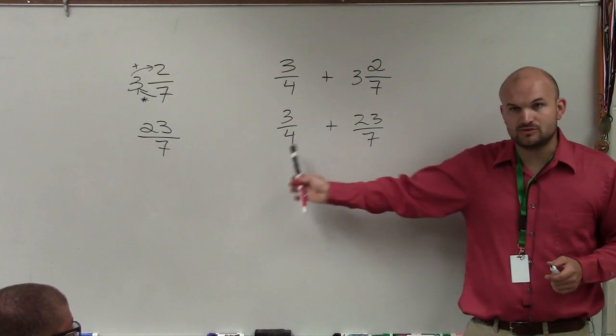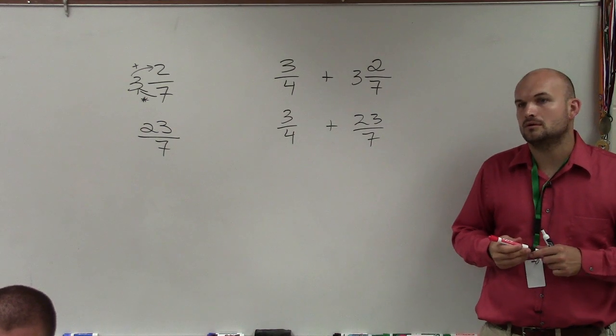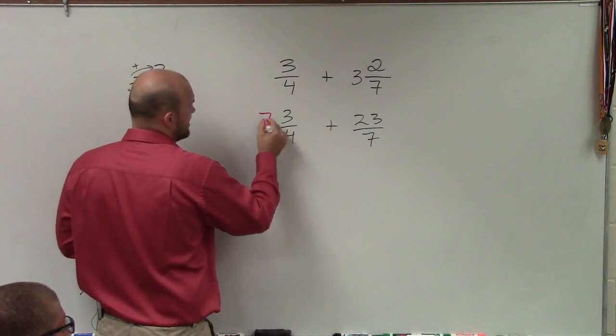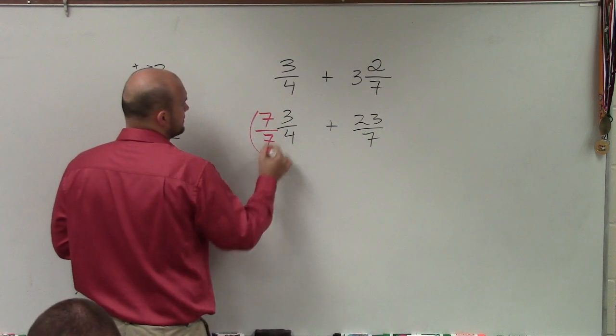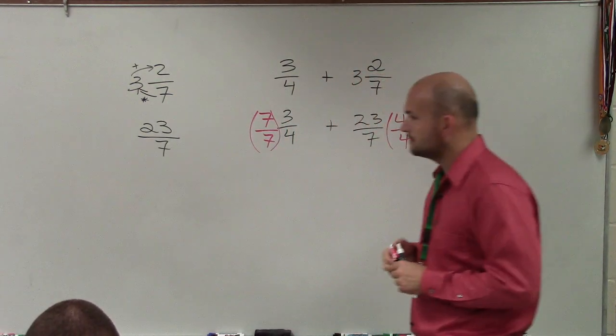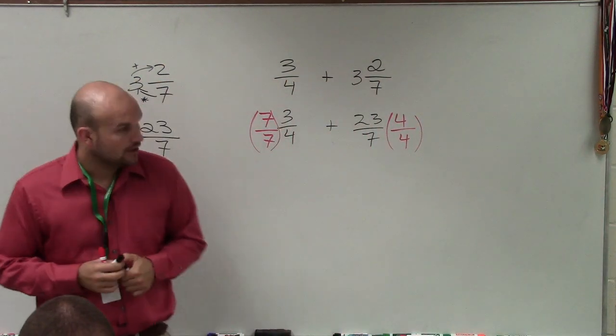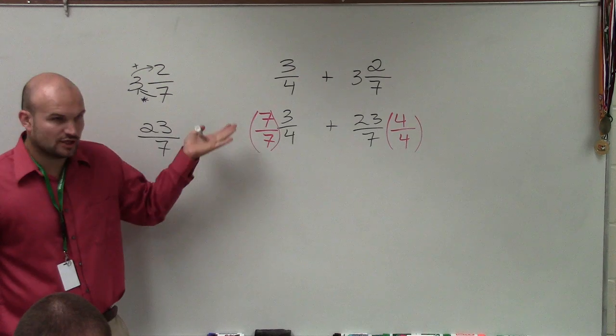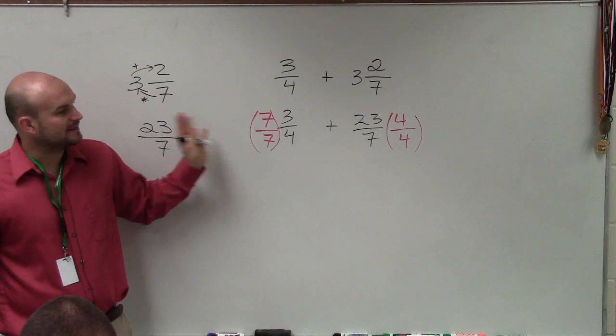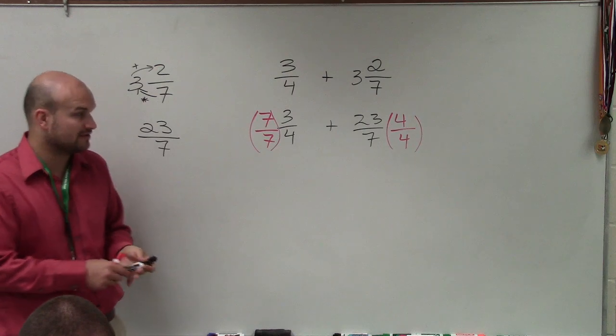So to get these both to be 28, which is your common multiple, I'm going to have to multiply here by 7 over 7, and here 4 over 4. The reason why I'm multiplying over the same is I need to produce an equivalent equation. Whenever you're multiplying fractions to get them to common denominators, you have to multiply the same on the top and the bottom to produce an equivalent fraction.